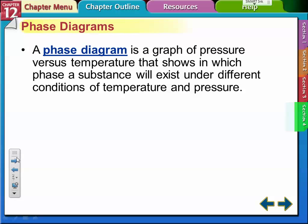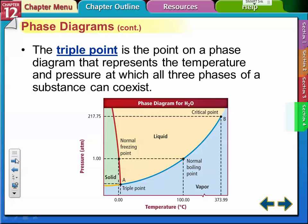A phase diagram is a graph of pressure versus temperature, and it shows at different temperatures and pressures which phase the substance will be in. This is a phase diagram for water, and the triple point, which is down here, represents a temperature and pressure at which all three phases can coexist. At this temperature and pressure here, it's a pretty low pressure and pretty low temperature.